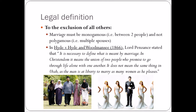The next element is 'to the exclusion of all others' — marriage must be monogamous, between two people, not between one man and four women or one woman and three men. In Hyde v Hyde and Woodmancy, Lord Penzance stated that in Christendom — reflecting the strong Christian influence on marriage at the time — it means the union of two people who promise to go through life alone with one another. In this case, the marriage had occurred in Utah under the Mormon faith, where polygamy was then allowed, but when they returned to England, polygamous marriage was not recognised.